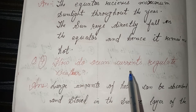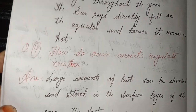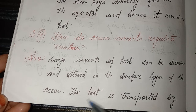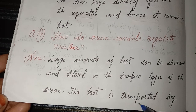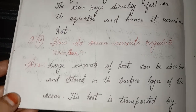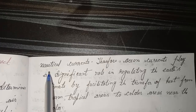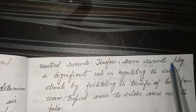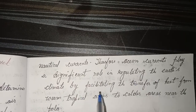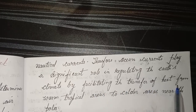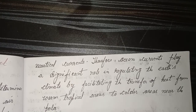Fourth, how do ocean currents regulate weather? Answer: A large amount of heat can be absorbed and stored in the surface layer of the ocean. This heat is transported by ocean currents. Therefore, ocean currents play a significant role in regulating the earth's climate by facilitating the transfer of heat from warm tropical areas to colder areas near the poles.